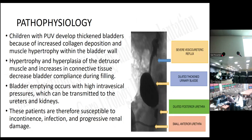Regarding pathophysiology: children with posterior valve develop thickened bladders due to increased collagen deposition and muscle hypertrophy within the bladder wall. Hypertrophy and hyperplasia of the detrusor muscles and increased connective tissue decreases bladder compliance. During voiding, bladder emptying occurs with high intravesical pressures, which can be transmitted to the ureters and kidneys. These patients are therefore susceptible to incontinence, infection, and progressive renal damage.